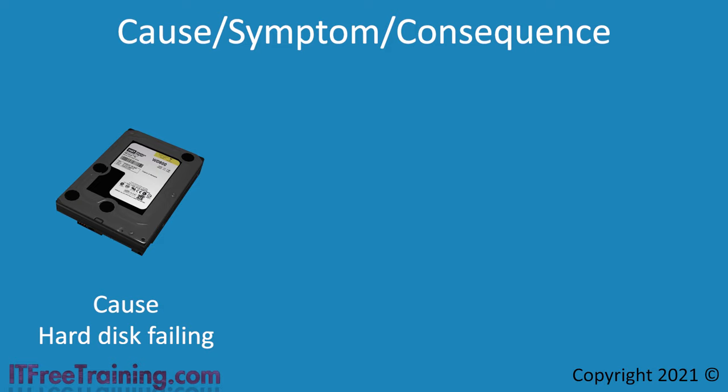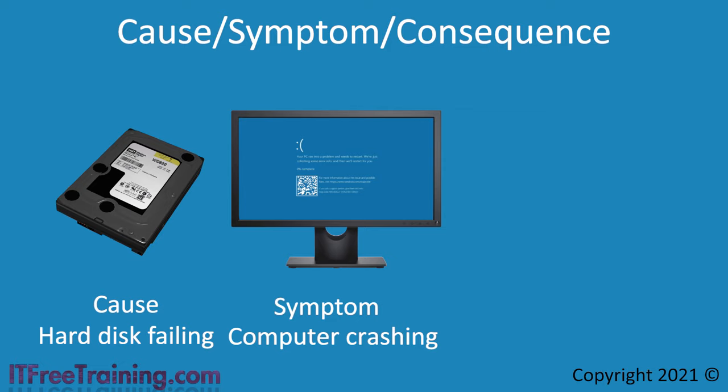The next thing to consider is the symptom. In this case, the symptom is the computer keeps crashing and giving a blue screen. The blue screen will give you an indication of how the crash occurred, but it may not always be accurate. For example, a failing hard disk may not appear as a hard disk problem — corrupt data reads may cause a crash in a completely unrelated system. If rebooting keeps giving different error messages, the cause may have nothing to do with the error message. Random blue screens can be from a failing hard disk, failing memory, or even a problem with the CPU.